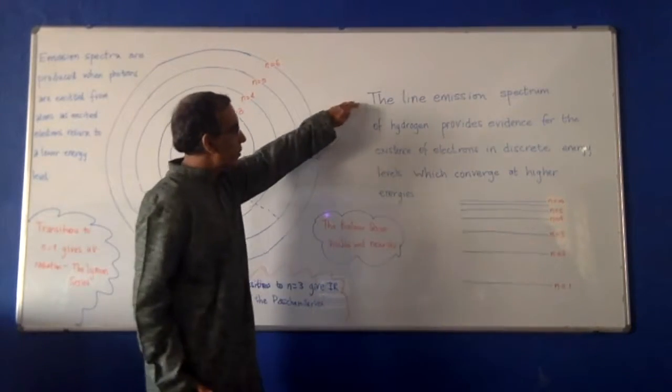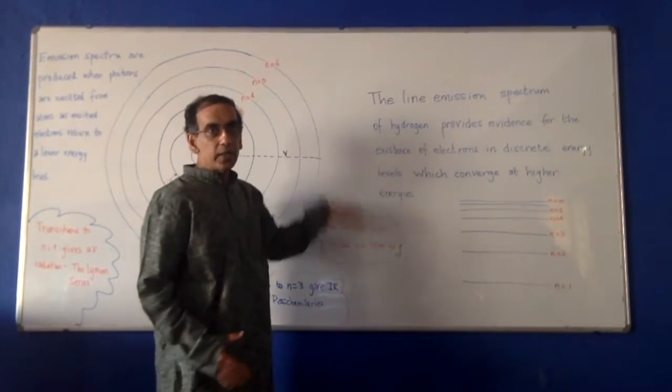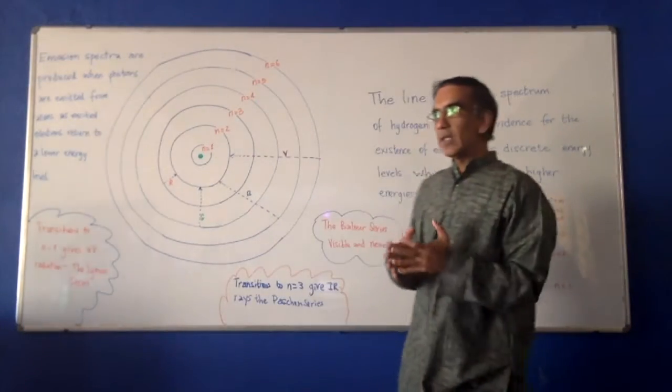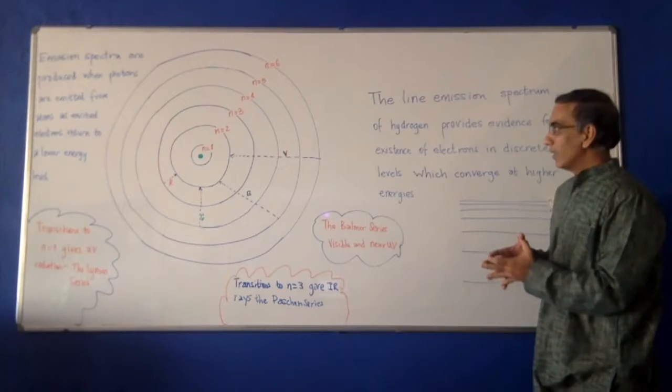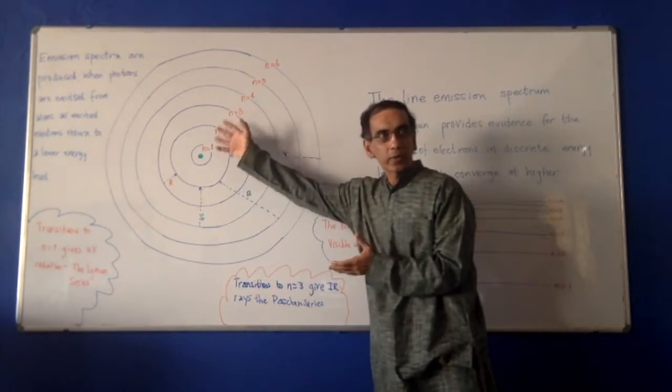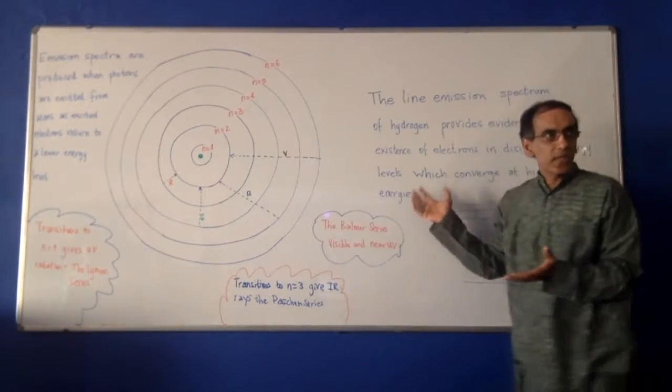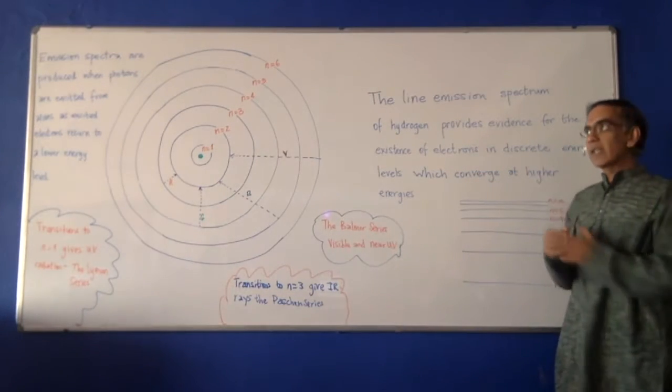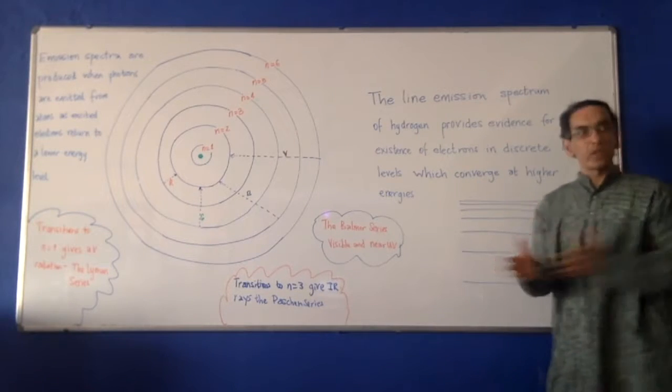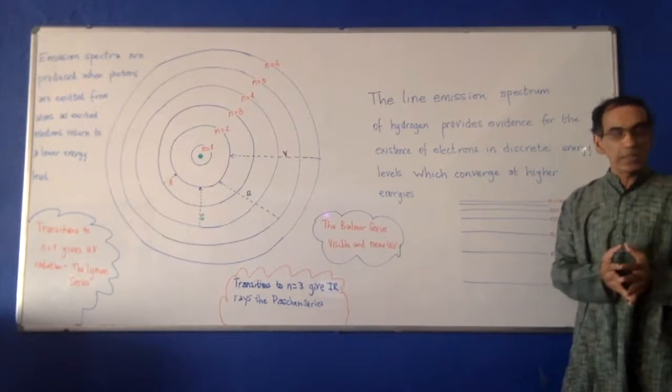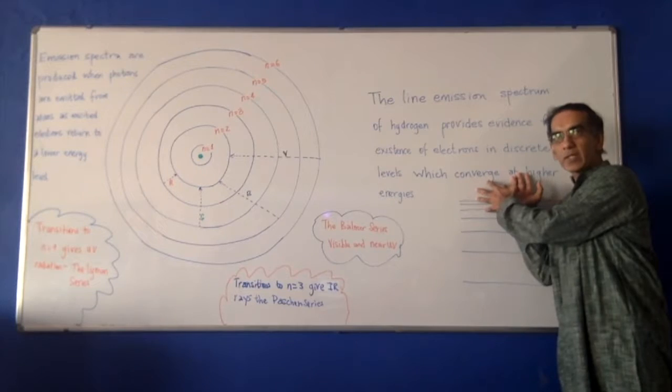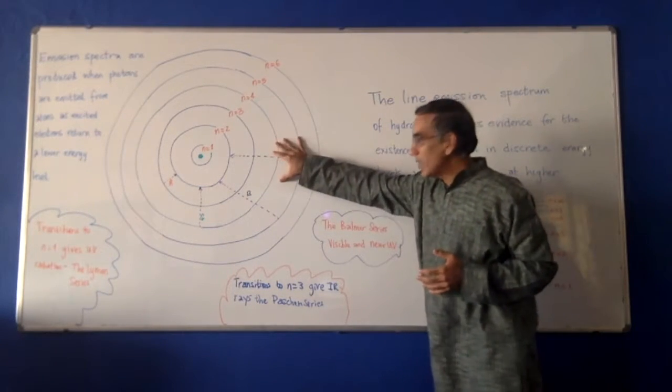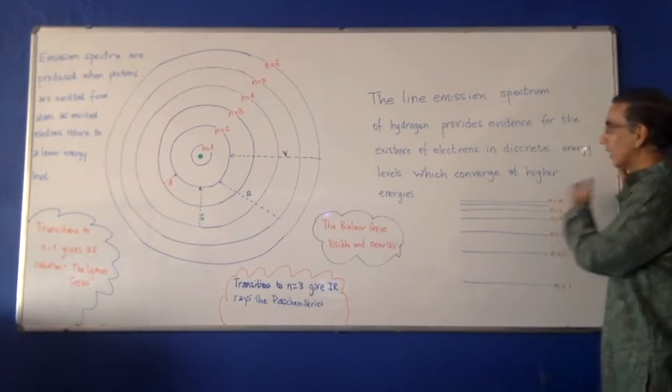The line emission spectrum of hydrogen, it is this reading that provides the evidence. Because science is not about having some model or story or whatever it is, and then just saying that this is so because we say it so. What makes a scientific truth as opposed to some other kind of truth, a belief maybe, is the need for evidence. So the Bohr model of the atom was based on this evidence, the line spectrum of hydrogen.